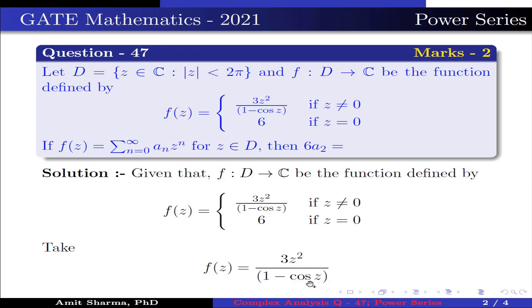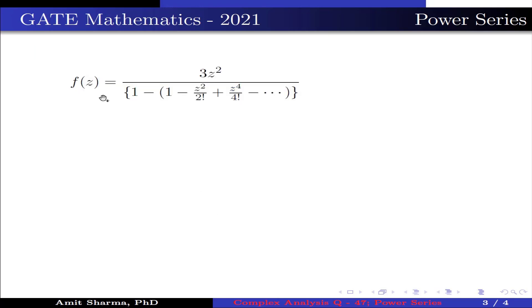Now, substituting the expansion of cos z, we get f(z) = 3z²/[1 - (1 - z²/2! + z⁴/4! - ...)], which is further simplified as 3z²/(z²/2! - z⁴/4! + ...).